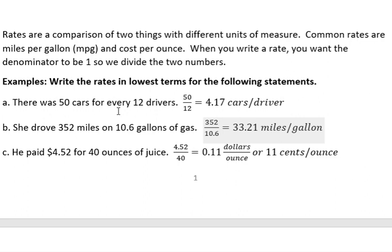So example, there were 50 cars for every 12 drivers. We start off with 50 over 12 and we divide that and say, okay, there was 4.17 cars per driver. Notice I have two units here because they weren't the same to begin with.